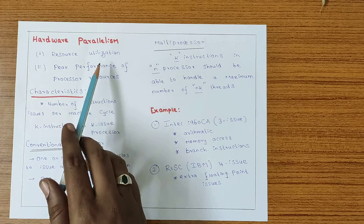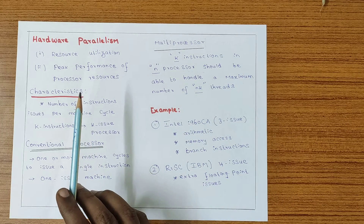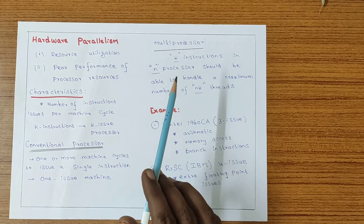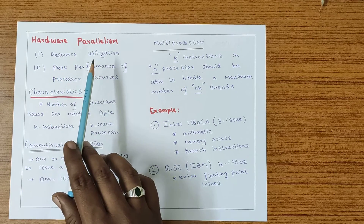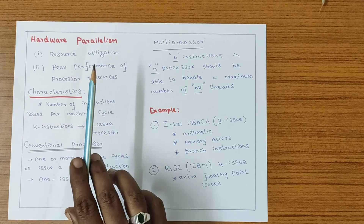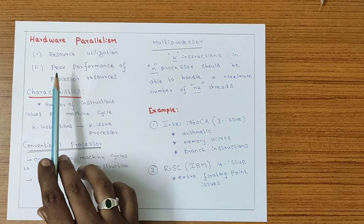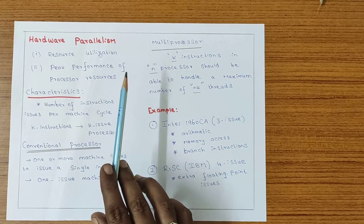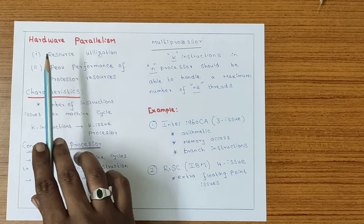The first point is resource utilization. To achieve parallelism, we need a joint effort of both hardware and software parallelism. If we have resources, we have to utilize them in a proper way — then the resource utilization is good. In hardware parallelism, the utilization of resources should be proper, and if the utilization of resources is proper, then the performance of the processor resources will be high, meaning we achieve peak performance.